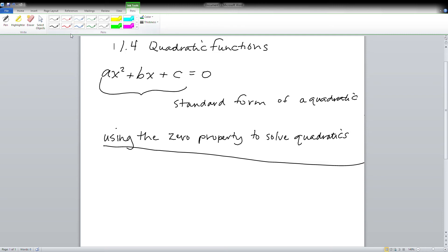Just a reminder of what zero property is - that just means that anything multiplied by zero equals zero. So one of the factors of this particular quadratic has to be zero, and that's what we're going to use in order to solve.